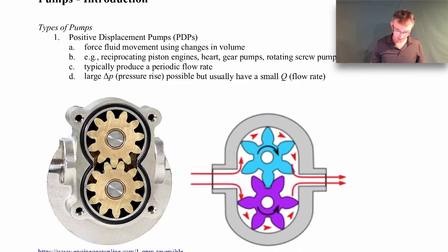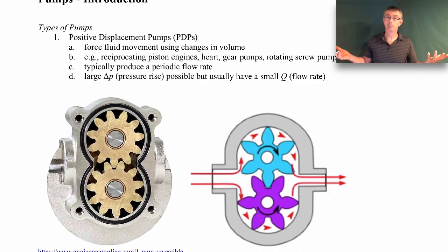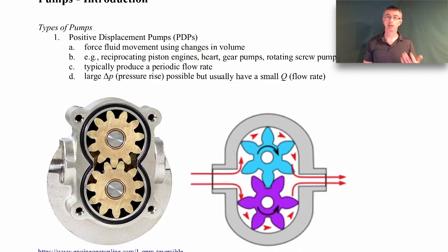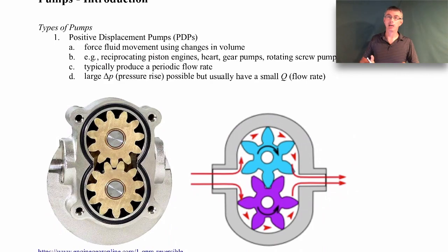A heart is an example of a positive displacement pump — it constantly changes its volume, and through a series of valves, blood comes in and goes out. Your diaphragm and lungs are also an example: when your diaphragm moves down it causes a change in volume, air is pushed in by atmospheric pressure, and when the diaphragm moves back up it forces that air out — another example of a positive displacement pump.